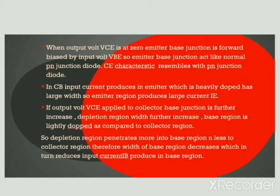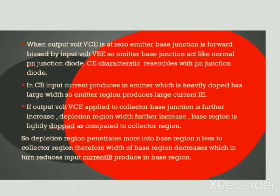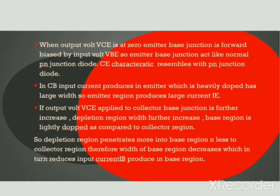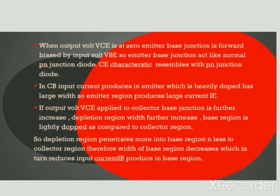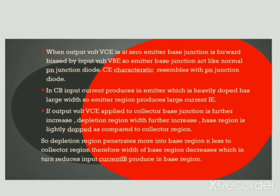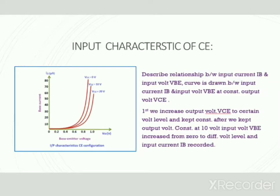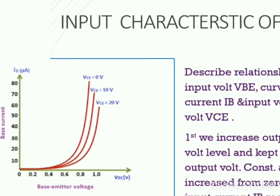Due to forward bias, the emitter-base junction acts like a forward biased diode. Due to reverse bias, the collector-base junction acts like a reverse biased diode. Since the base region is lightly doped compared to the collector region, the depletion region penetrates more into the base region and less into the collector region. As a result, the width of the base region decreases, reducing input current. For higher VCE values, the curve is shifted towards the right side, as seen in the graph.